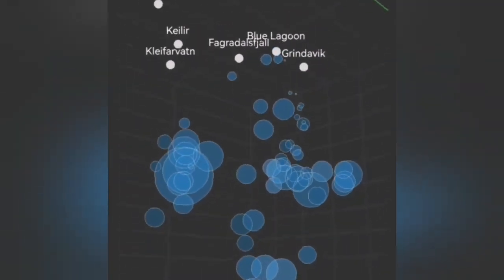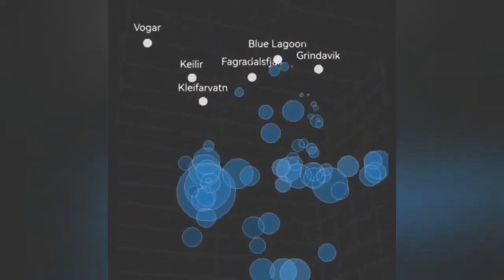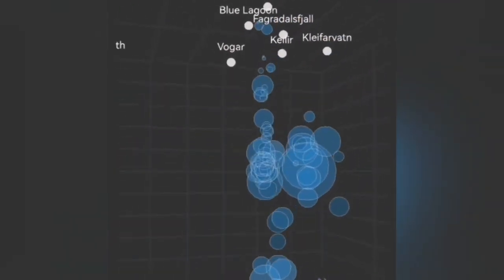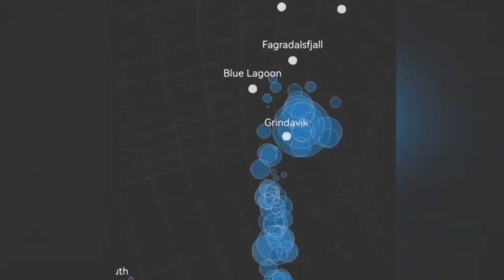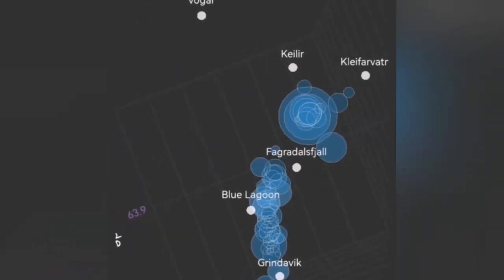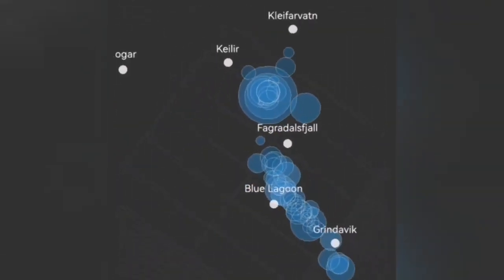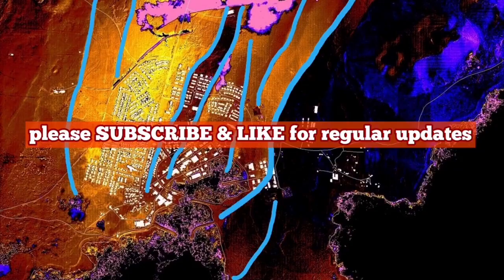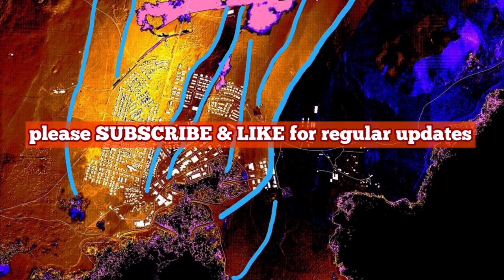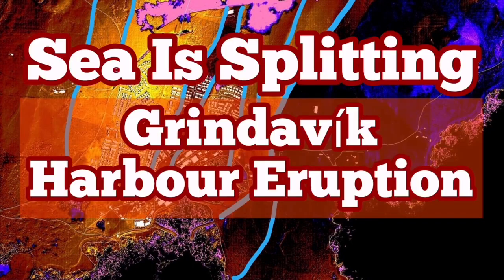I show you here, clear for what is related to that Krisuvik volcanic system and the Grindelvik, you can see that. Near the Svartsengi, we don't have Sundhnuka, we have something, and now off the coast of the Grindelvik, in the ocean, we see the rising of the earthquakes, means the magma is rising with it.